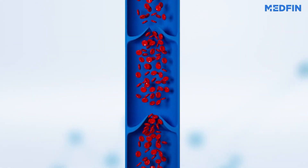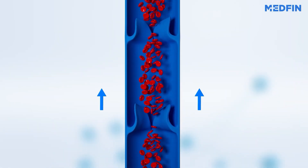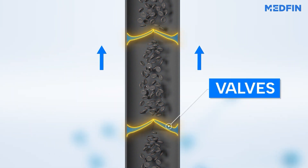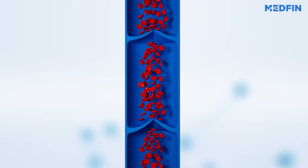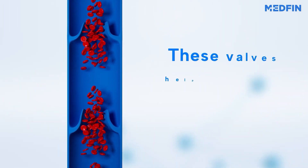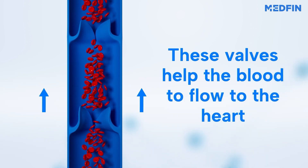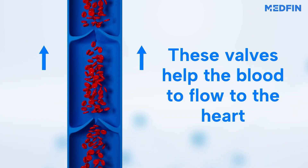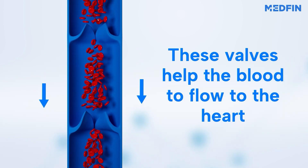The veins in our legs have a mechanism to help blood move upward against gravity — it's called valves. These valves open up as the blood moves upward and close afterward to prevent the blood from being pulled back down by gravity.